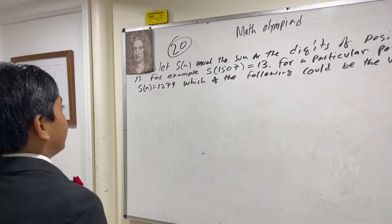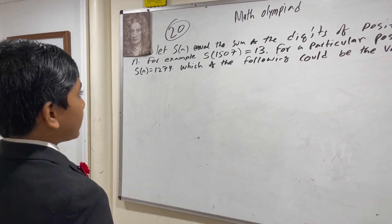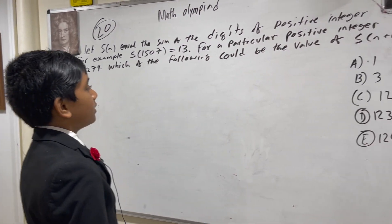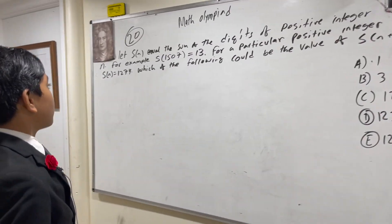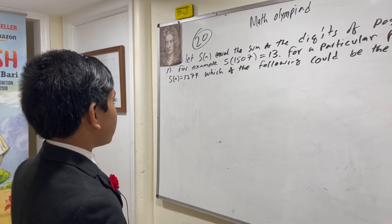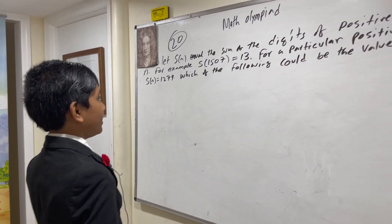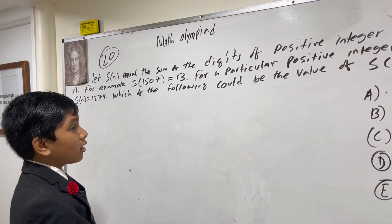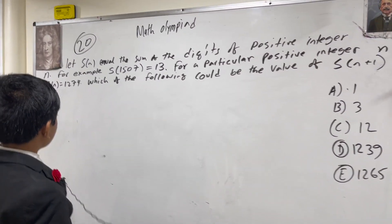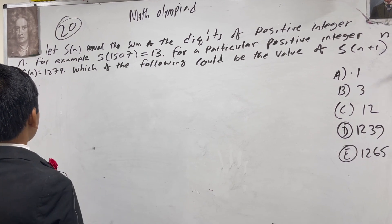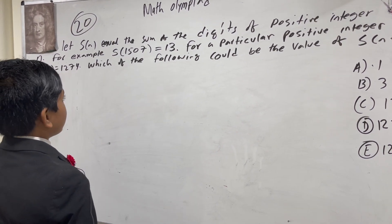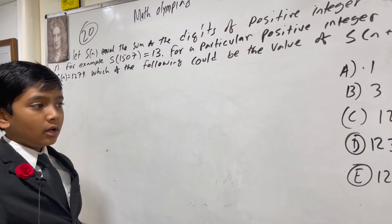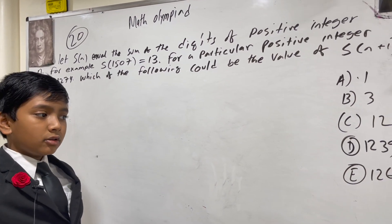AMC 10A 2017 Problem 20. Let s(n) equal the sum of the digits of a positive integer n. For example, s(1507) = 1 + 5 + 7 = 13. For a particular positive integer n, s(n) = 1274. Which of the following could be the value of s(n+1)? The choices are: 1, 3, 12, 1239, or 1265.